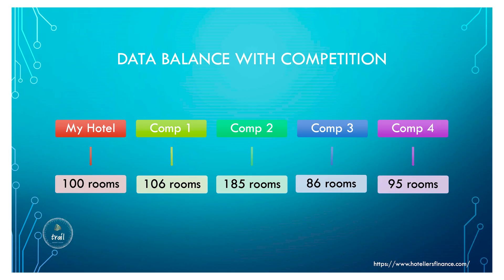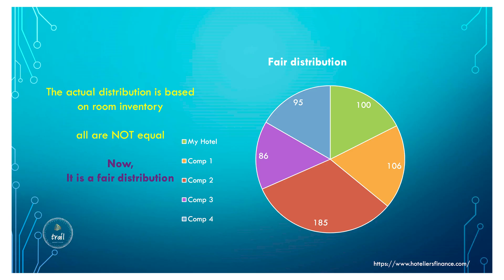For today's video we'll take four competitors and our hotel — five hotels total. Our hotel has 100 rooms, competition one has 106, competition two has 185, competition three has 86 rooms (smaller than ours), and competition four has 95 rooms. We'll use these five hotels to find hotel performance. Actual market share is based on the number of rooms each hotel has.